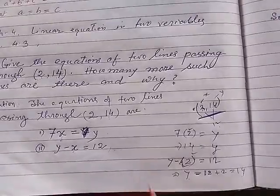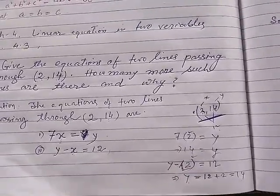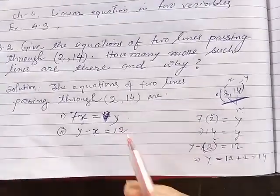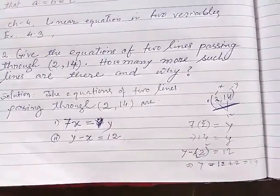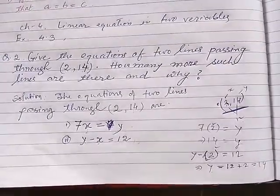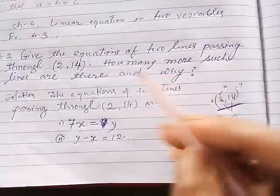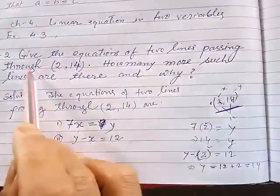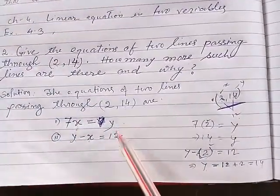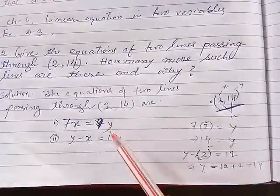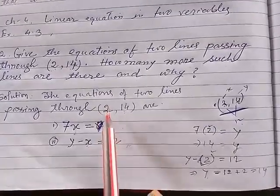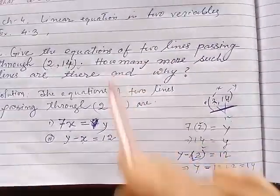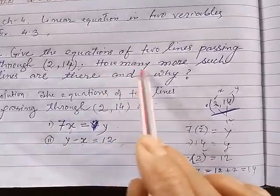So these are two possible equations whose graph will surely pass through this point. The first part is over — give the equations of two lines passing through this point. We have given two equations: 7x = y and y − x = 12, whose line graph will be passing through this point.